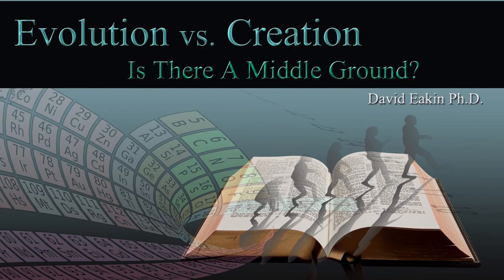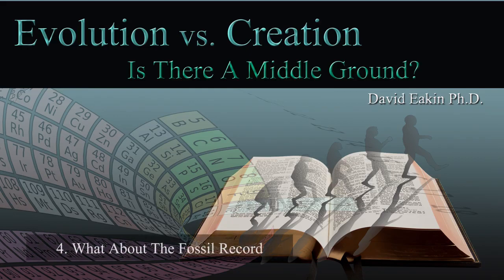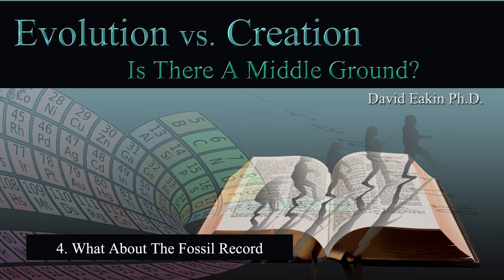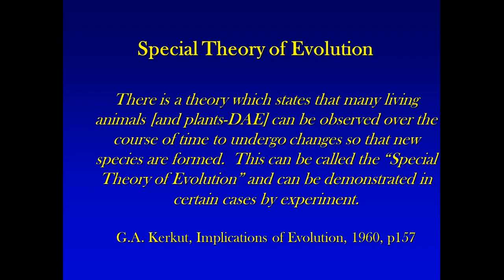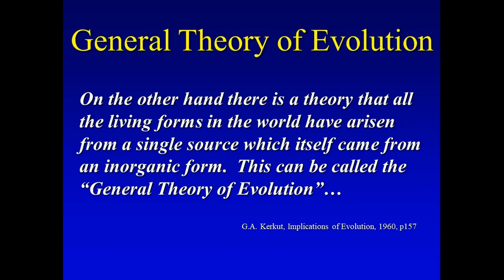What we've done is talked about three basic things. I probably need to change this chart as I've begun to change how I present this. The material hasn't changed, but there is a difference between the special and general theories of evolution. What's the special theory? Natural selection. And the general theory is kind of the single cell up to humans kind of change, and we'll talk more about that tonight.